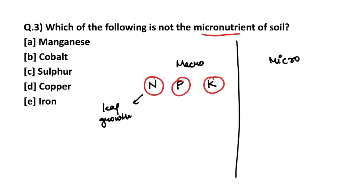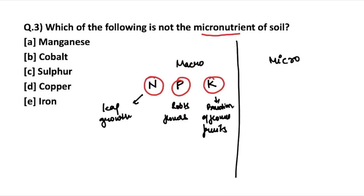Phosphorus develops roots and flowers. Potassium promotes strong stem growth and the promotion of flowers and fruits. These are the major contributions of macronutrients. There are also three secondary macronutrients: calcium, magnesium, and sulfur — very important to remember.